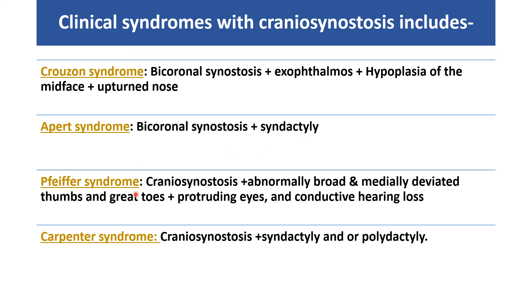Pfeiffer syndrome presents with abnormal broad and medially deviated thumbs and great toes along with craniosynostosis, protruding eyes, and conductive hearing loss. Carpenter syndrome also presents with syndactyly or polydactyly. So this is all about craniosynostosis and Crouzon syndrome.